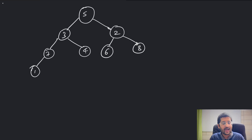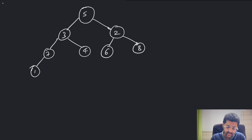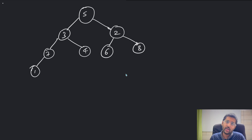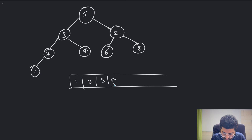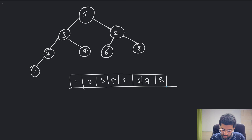These two nodes are swapped — it can be any two nodes. One of the ways you can solve this: imagine that if this is a binary search tree and we do an in-order traversal, we know it will produce a sorted array. Before the swapping, the sorted array would look like: 1, 2, 3, 4, 5, 6, 7, 8.